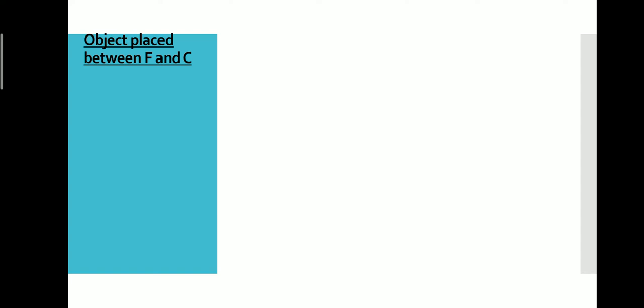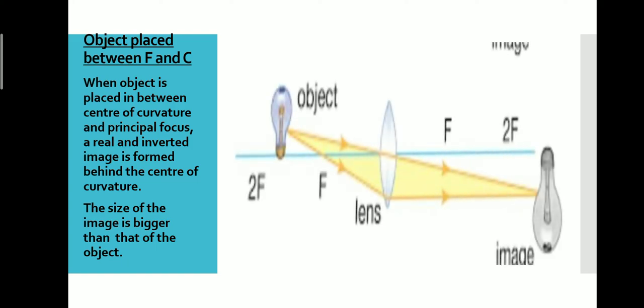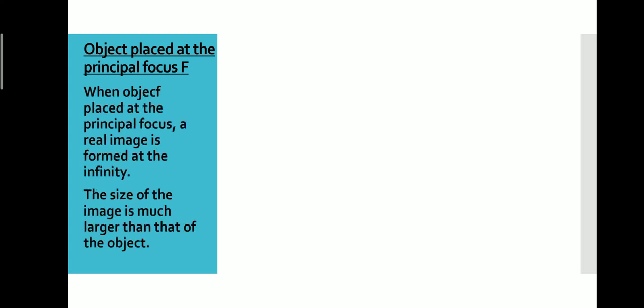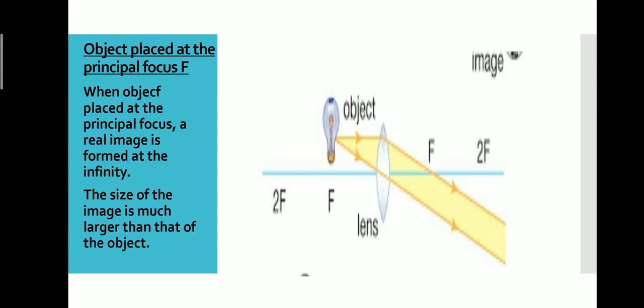Next is the object placed between F and C. When an object is placed between the center of curvature and F, the image will be formed beyond 2F, and the size will be bigger than that of the object. Next, when the object is placed at the principal focus F, the image will be formed at an infinite position and it will be a large size.